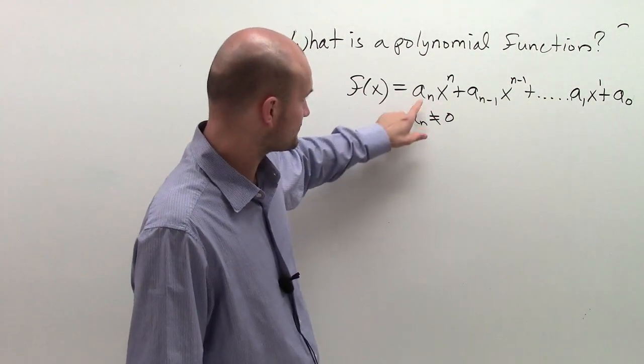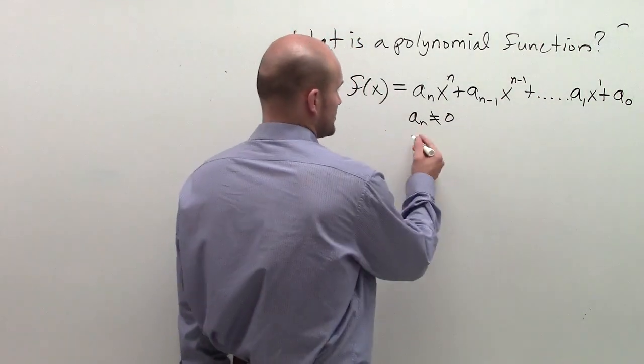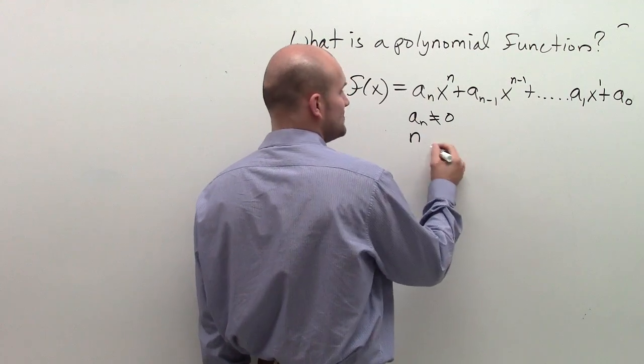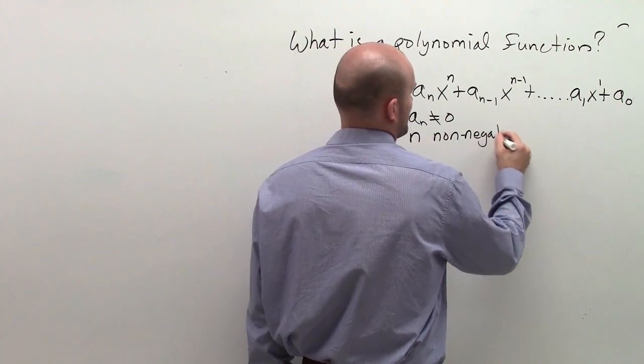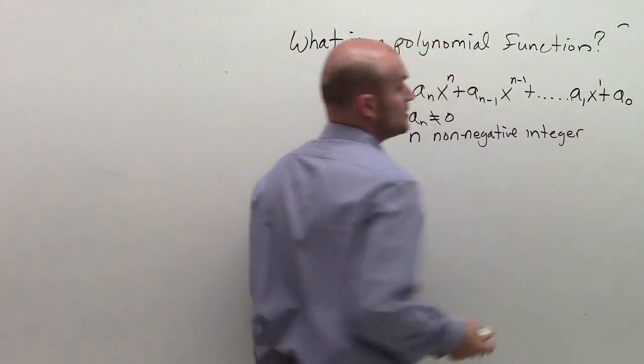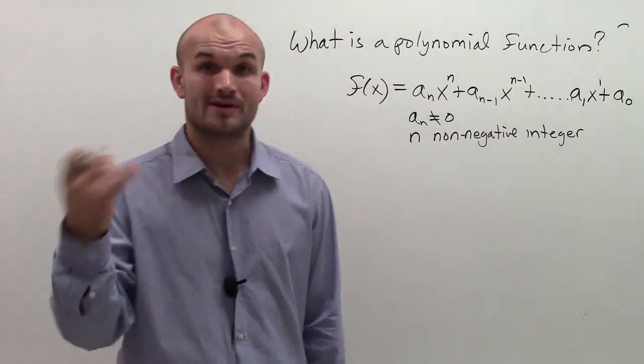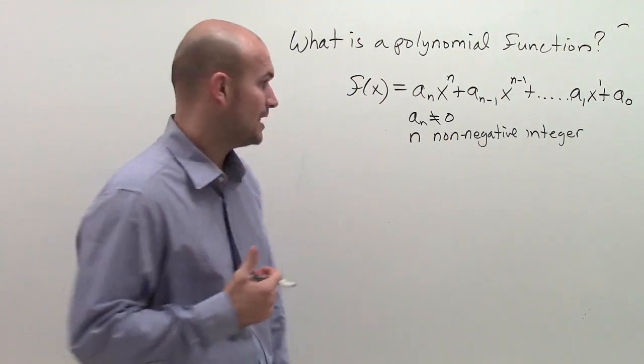Now, that means any one of those terms cannot just simply equal 0. Let's look at the next one. n has to be a non-negative integer. So therefore, negative numbers or negative exponents and rational exponents are not going to be a part of polynomial functions.